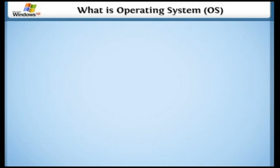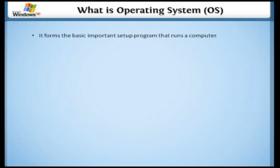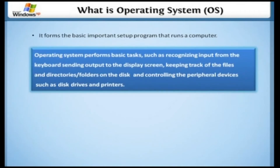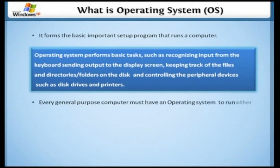What is an operating system? In this lesson, we are going to discuss the operating system and its functions. It forms the most important setup program that runs the computer. Operating systems perform basic tasks such as recognizing input from the keyboard, sending output to the display screen, keeping track of files and directories and folders on the disk, and controlling peripheral devices such as disk drives and printers.